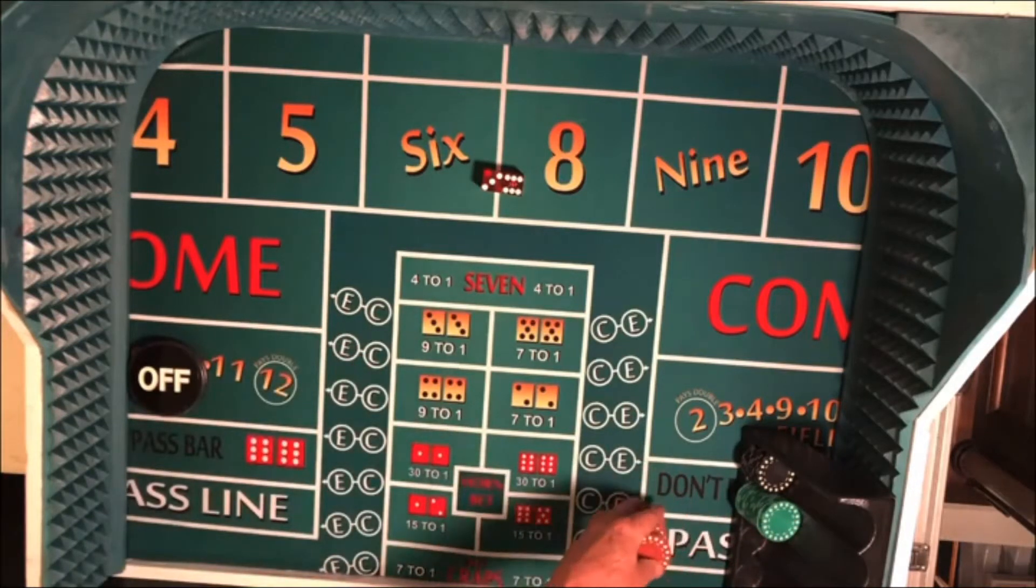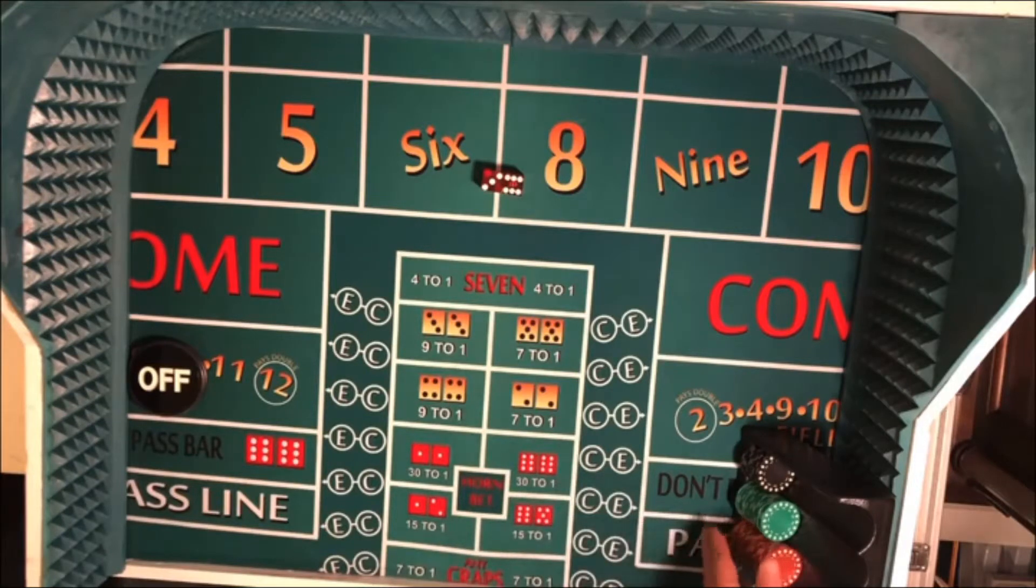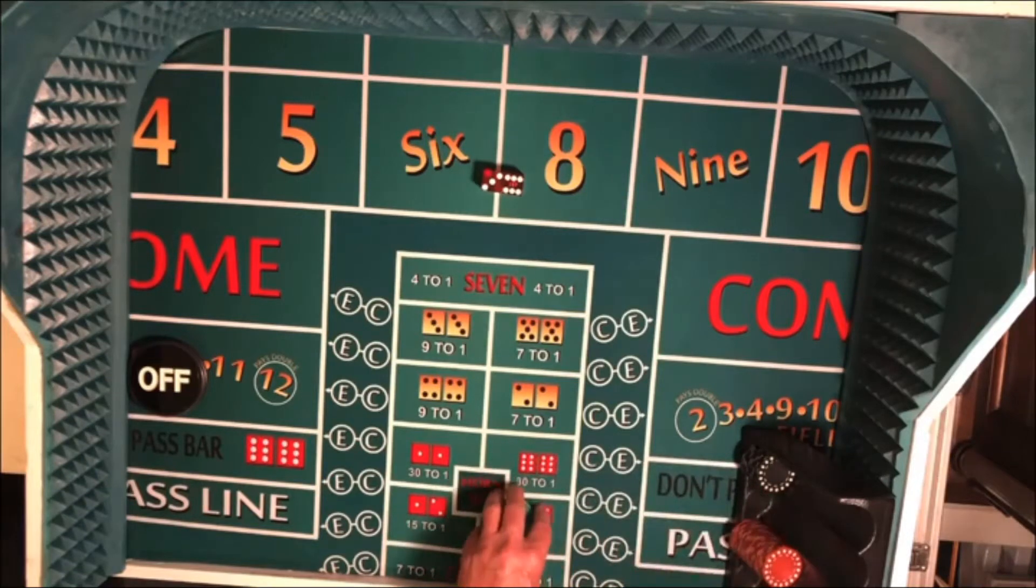We'll be starting off with our usual $1,500 bankroll here, $1,000 in the blacks, $400 in the greens, and $100 in the $5 red birds.